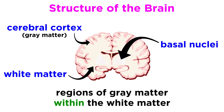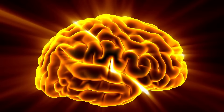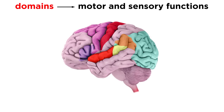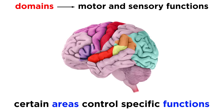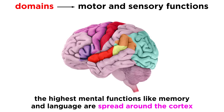The cerebral cortex is the most recently evolved section of the animal brain, and as such, it is where the conscious mind is found. It is made of gray matter comprised of six layers of interneurons, as well as glia and blood vessels. There are specific regions in the cortex called domains, which are responsible for particular motor and sensory functions — certain parts of the cortex are in charge of certain aspects of bodily function. We call these motor areas, sensory areas, and association areas. The highest mental functions, like memory and language, are spread around much of the cortex and overlap numerous domains.